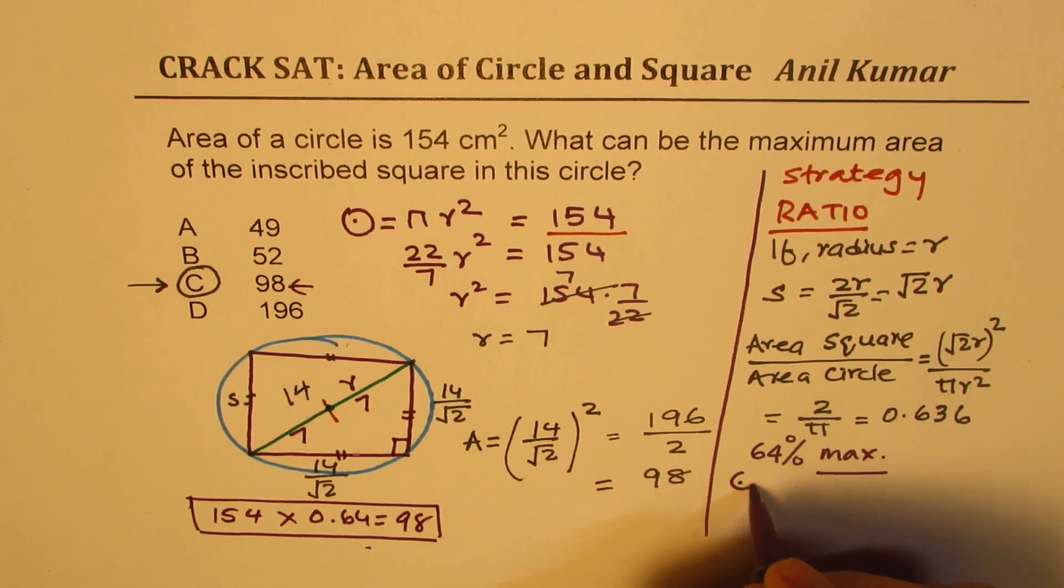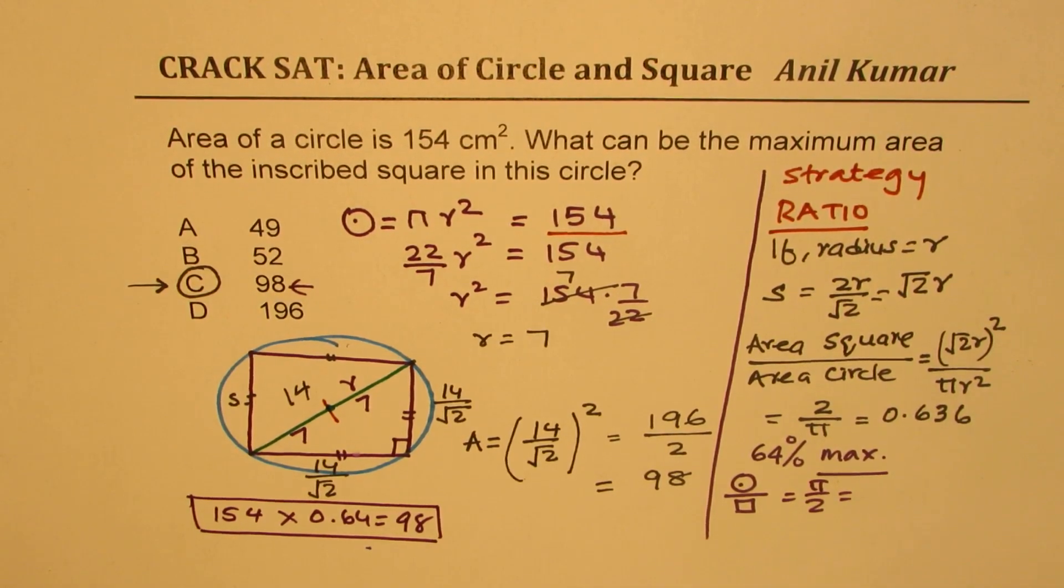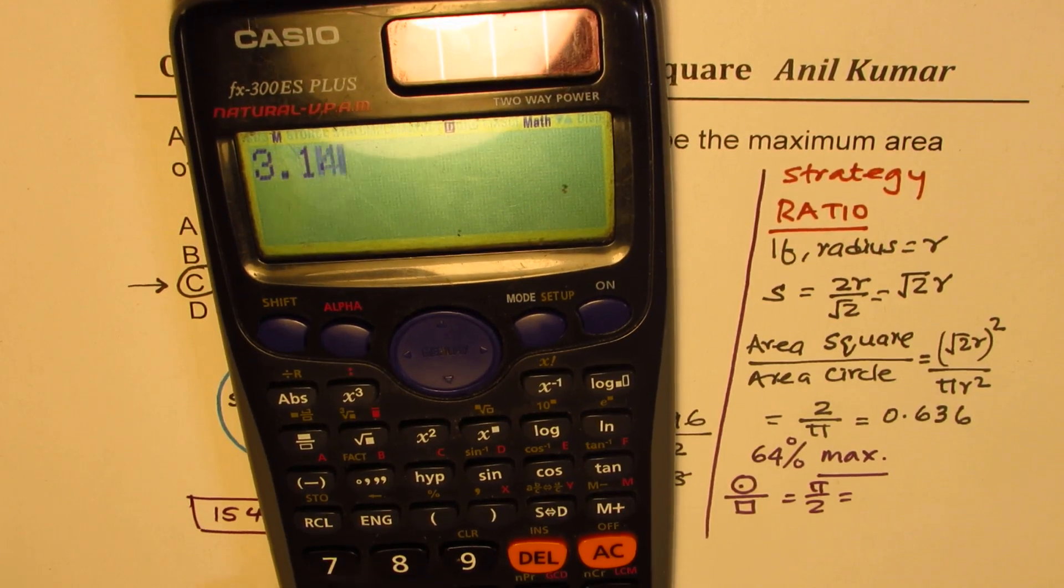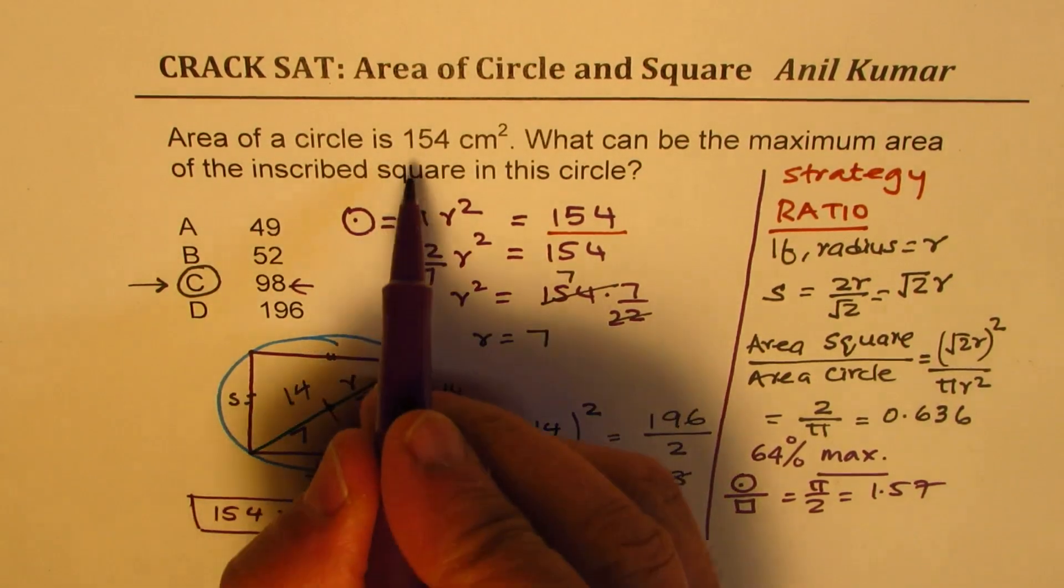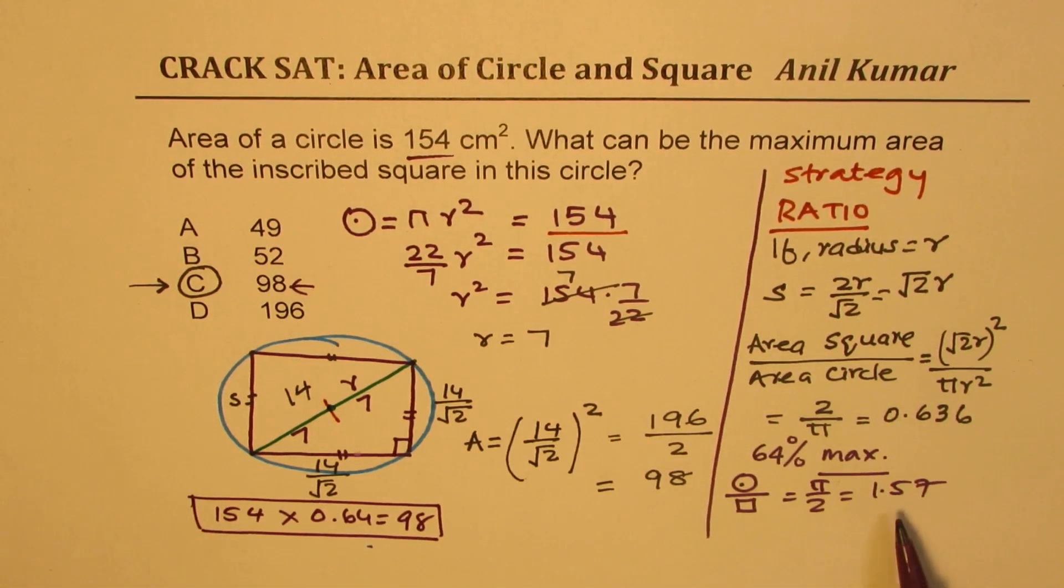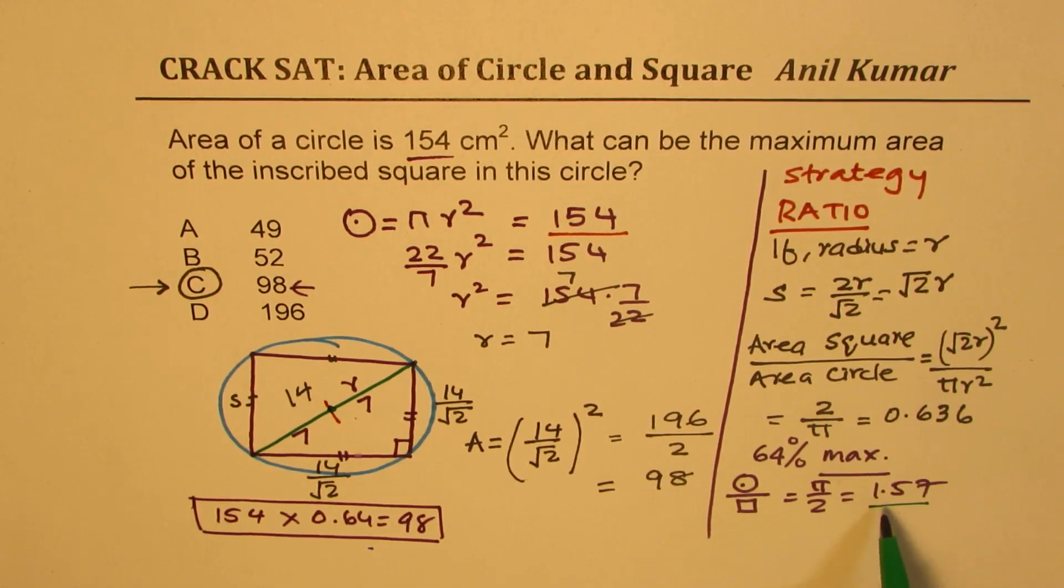The other way, that is, area of circle over a square will be π divided by 2. So that also is a good number to remember, which is 3.14 divided by 2 in decimals is equal to 1.57. So if you remember these values, such questions could be answered very easily by using the formula itself. That is, area of square is 64% of that of a circle, and area of circle is more than one and a half times, 1.57 times that of a square.